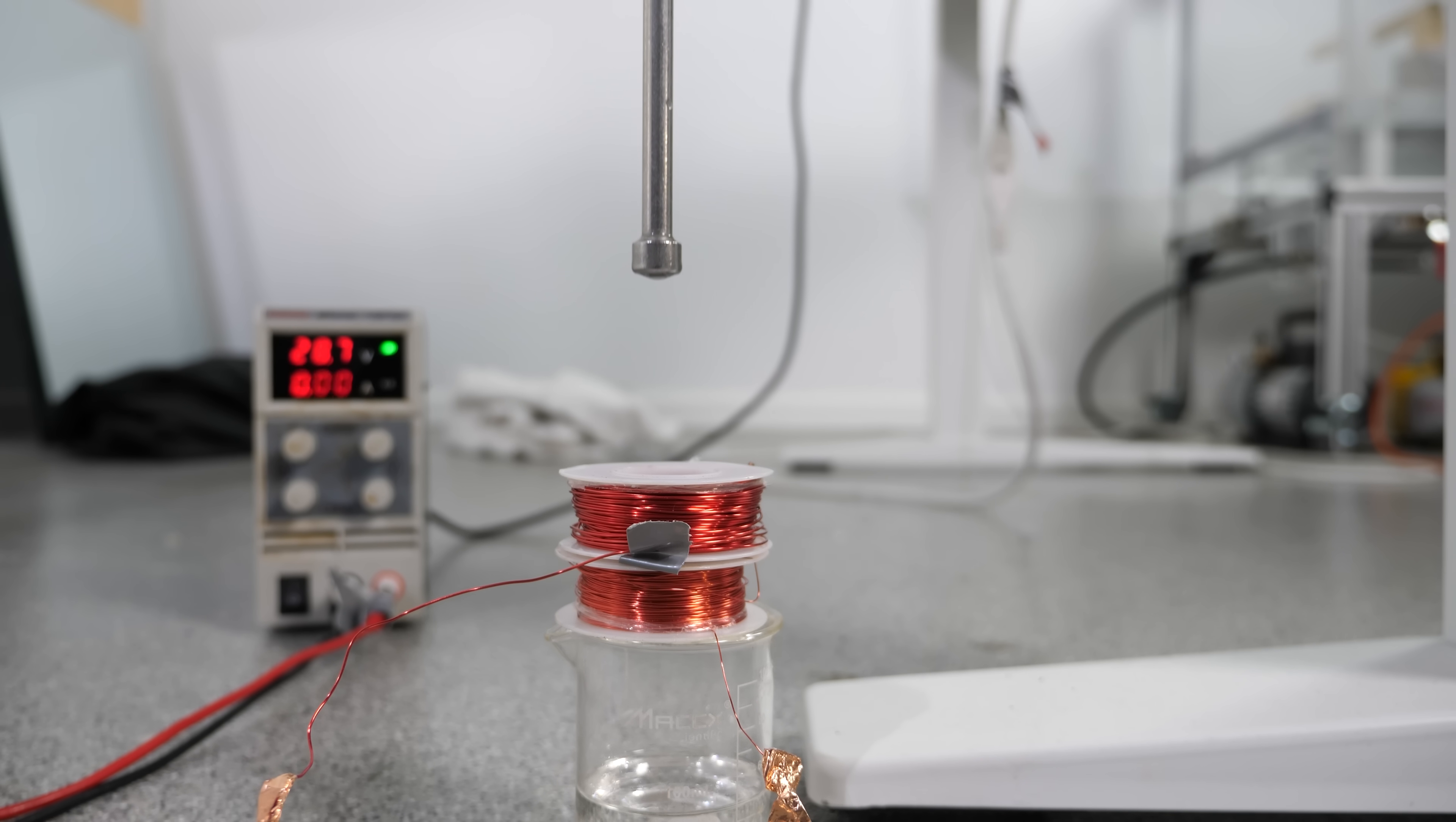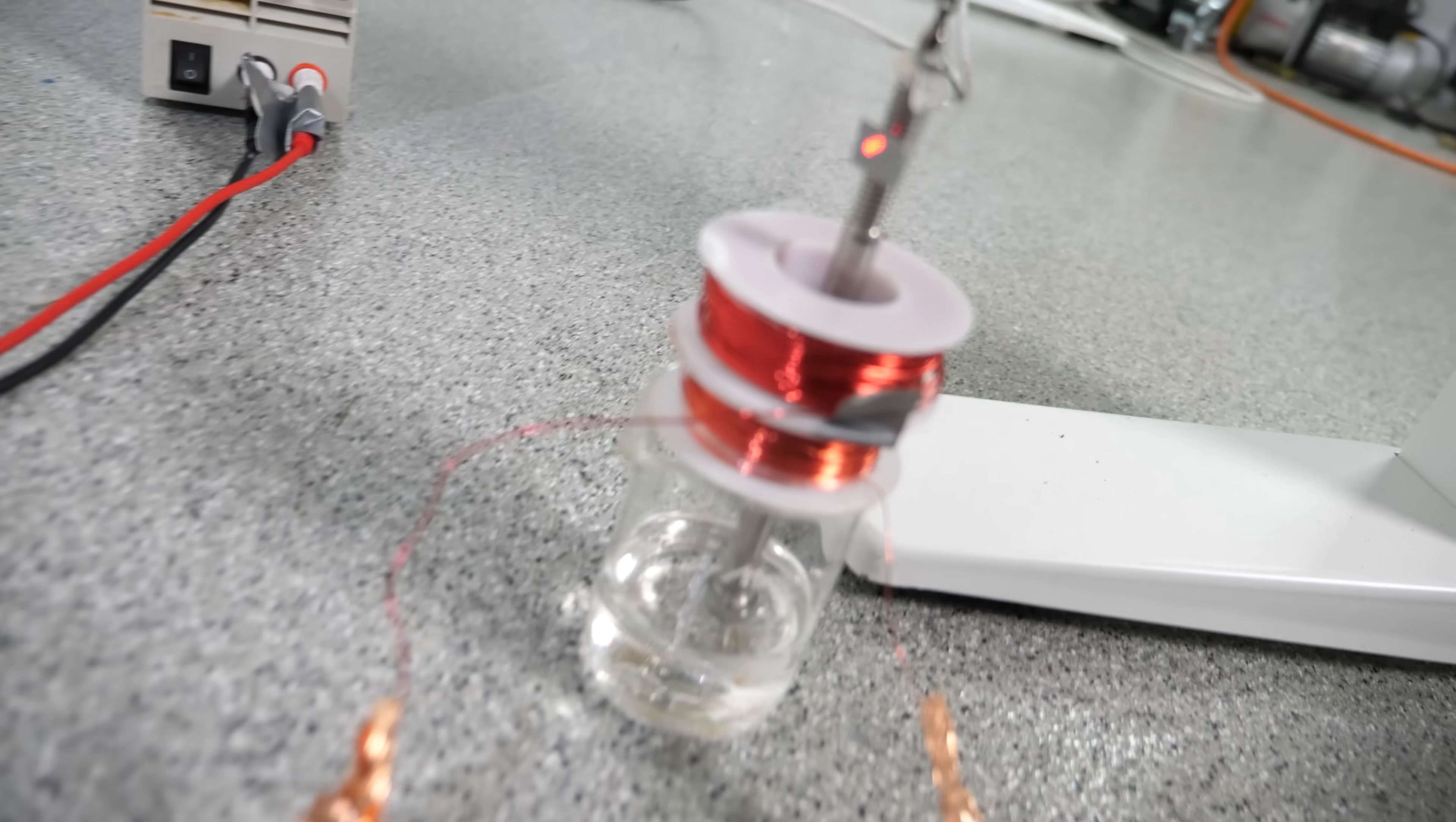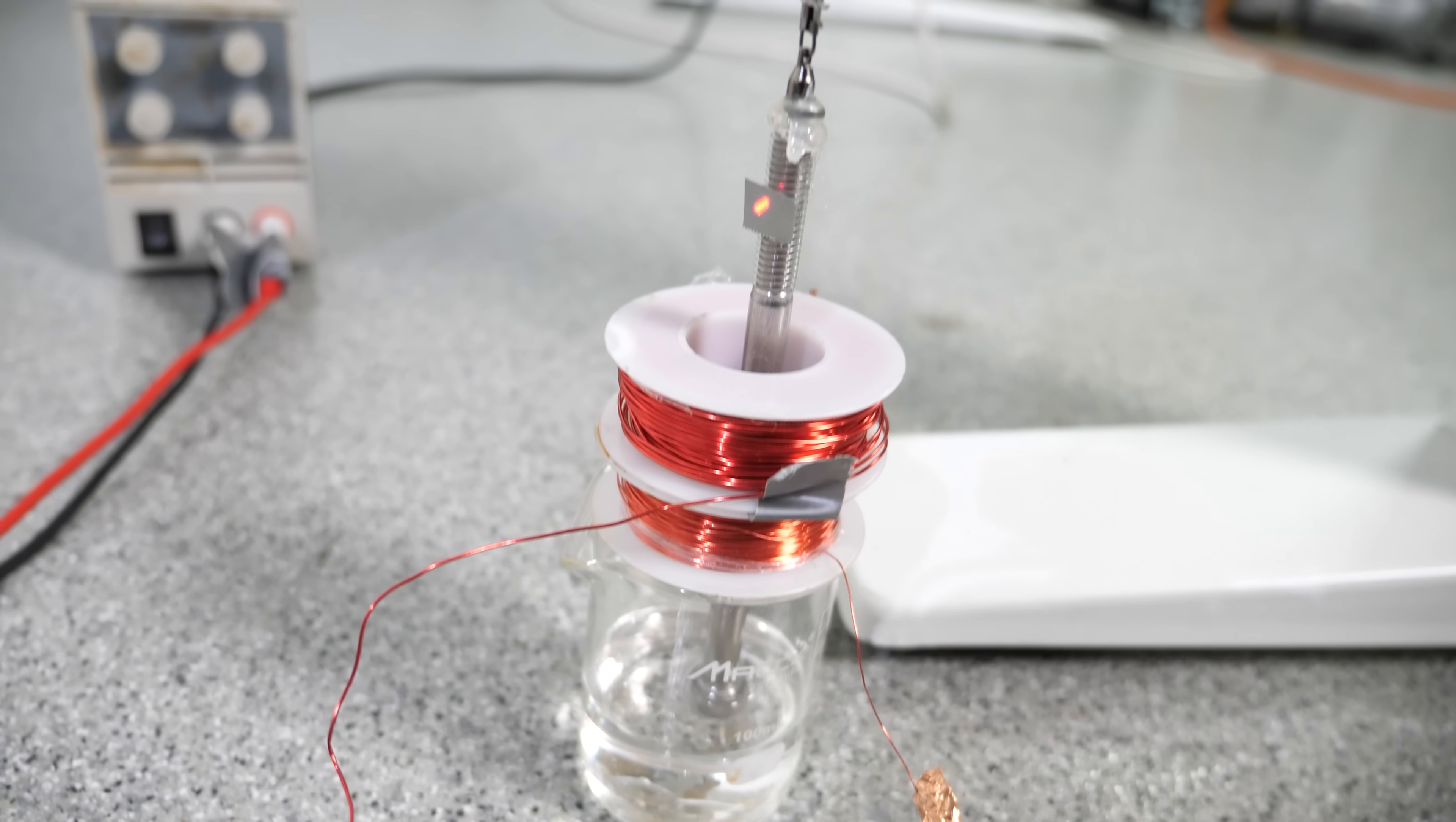To detect it, I'll hang the bolt from a string and attach a tiny mirror to it. Then I'll shine a laser onto the mirror and watch the reflection on the wall.